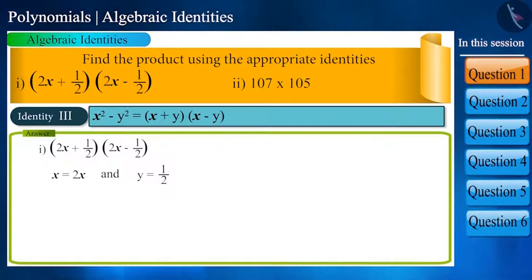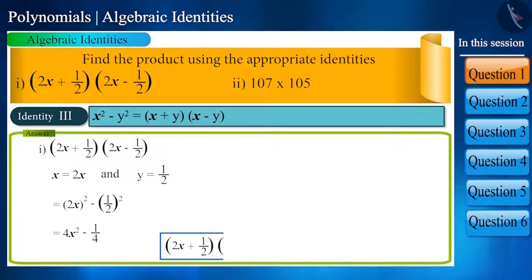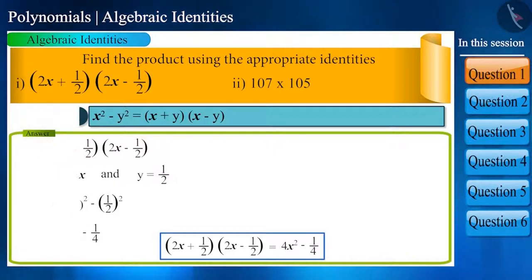That is, (2x + 1/2)(2x - 1/2) = (2x)² - (1/2)². After solving this, we will get 4x² - 1/4.